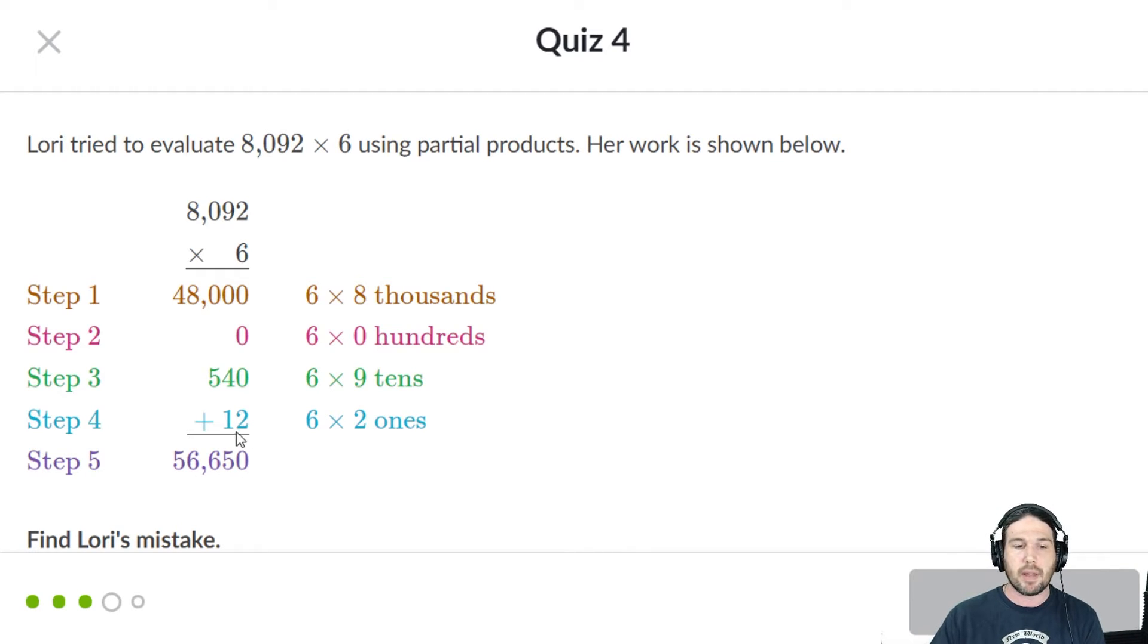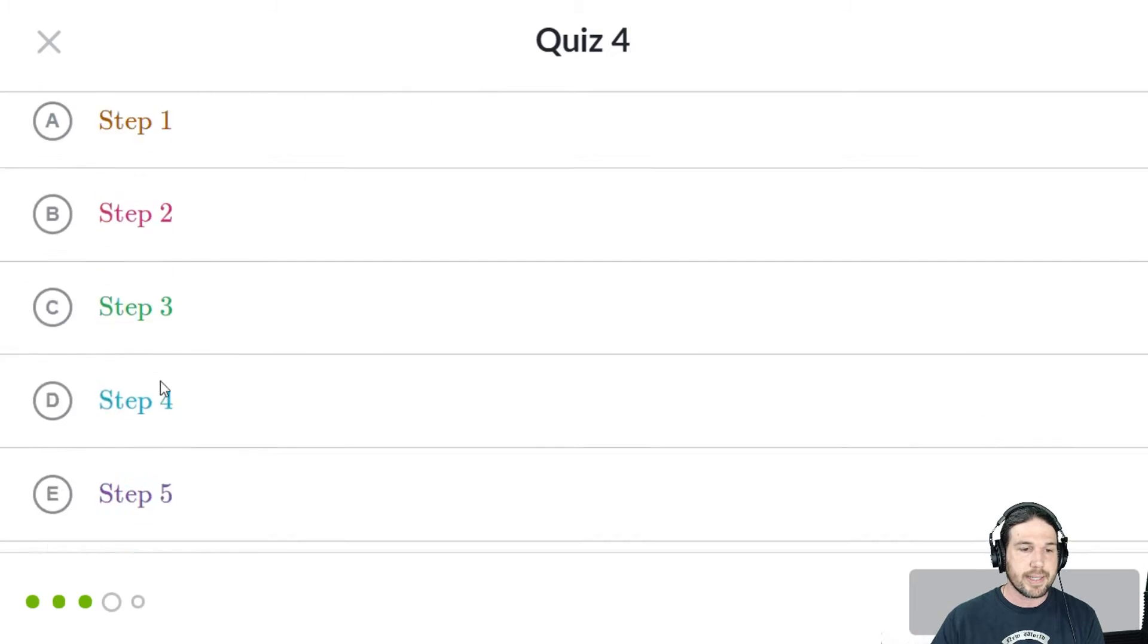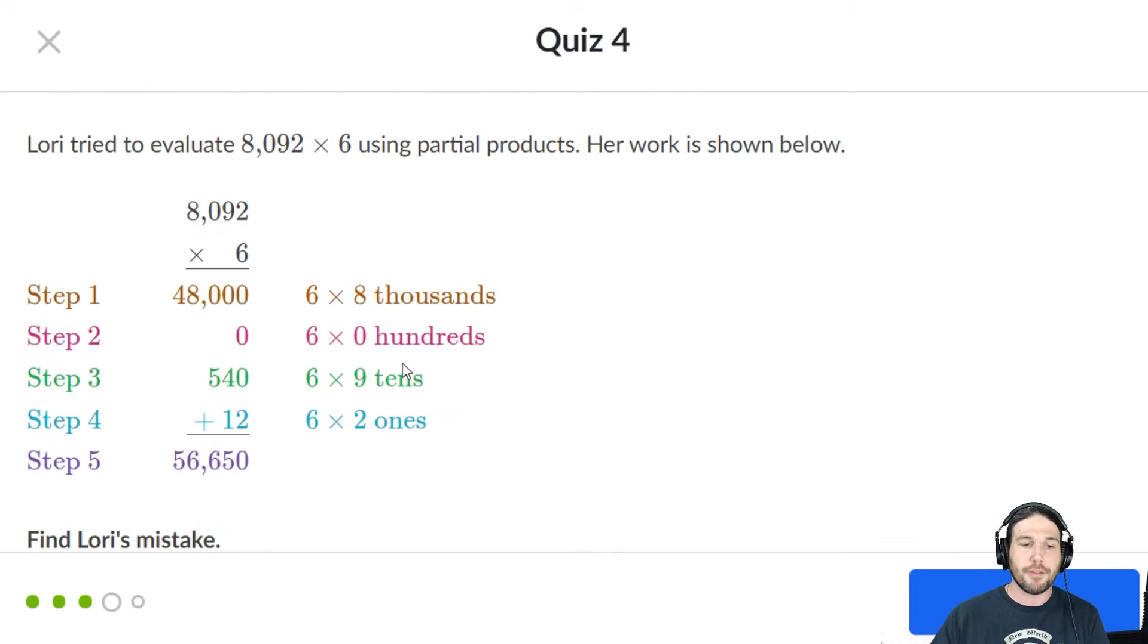So something happened in the addition. I'm not sure exactly what, maybe they added 120 instead of 12 or something like that, but it is in step 5, the final total. And again, very important to note, if I was a teacher, and I saw this problem, and someone gave me these steps, and this was a 5 point problem,